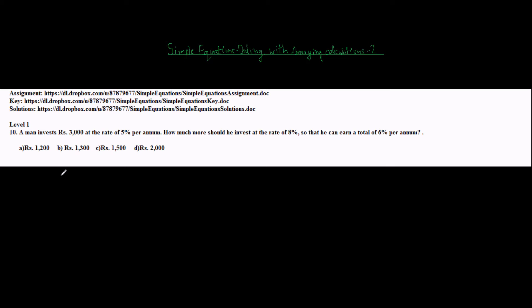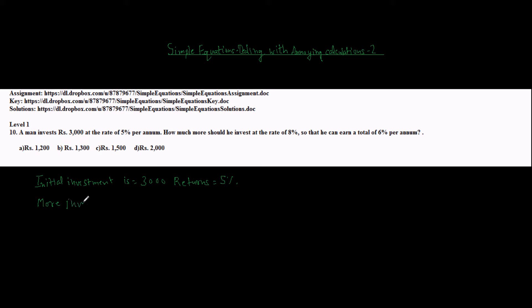The unknown is how much more amount he should invest. So the initial investment by the man is Rs 3000 and the returns expected are 5%. The more investment is what we have to find — how much more should he invest as asked. So let this unknown more investment be x.